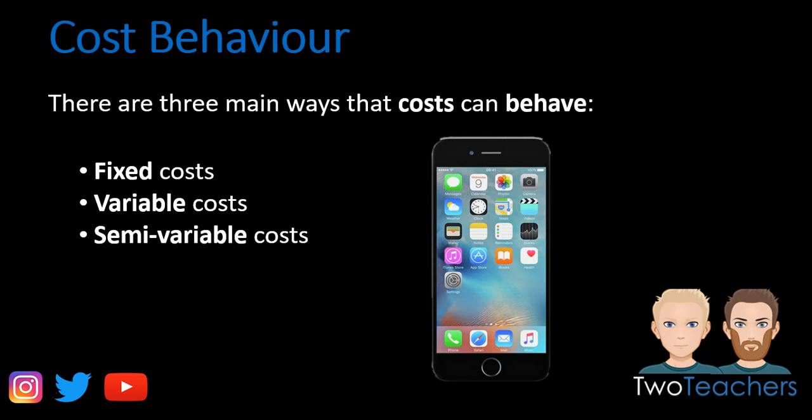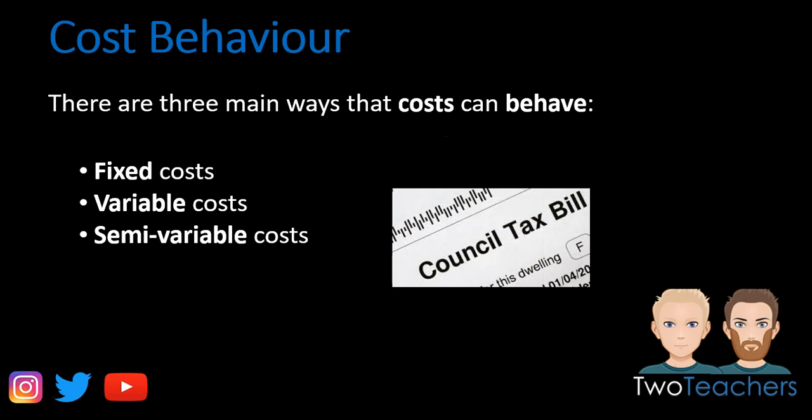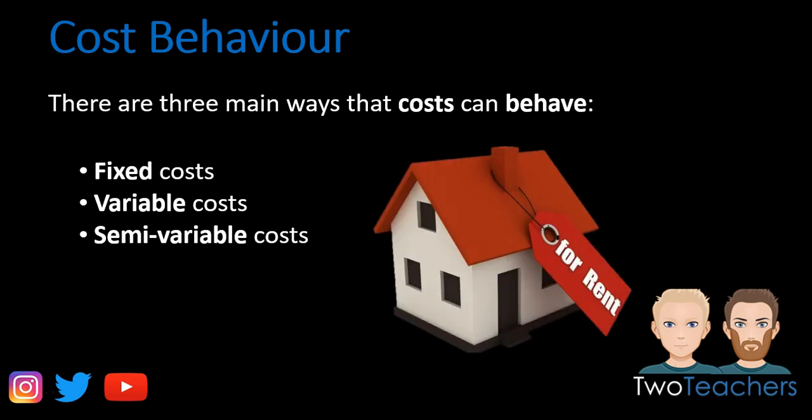Now let's look at how that impacts a business. Council tax is a fixed cost because the business has to pay it — say the fee is £150 — whether they are producing or not. Another example is the rent on a factory. If we are producing iPhones, whoever we are paying rent to will want their payment on time regardless of whether we have produced 1,000 iPhones that month, a million iPhones, or none at all.